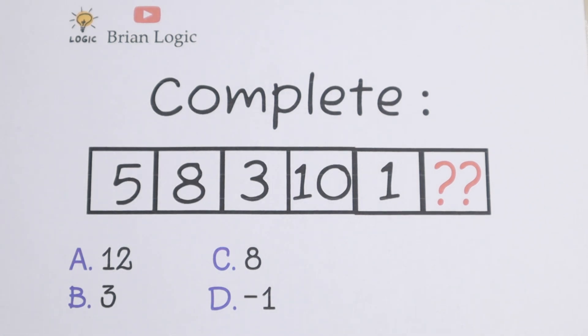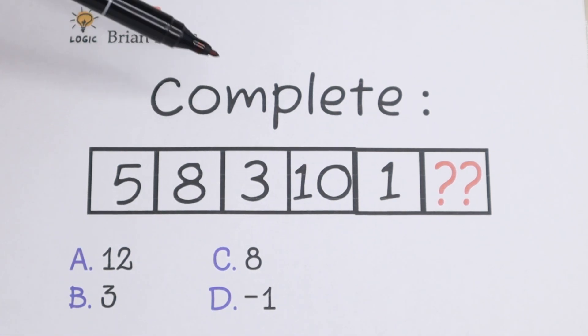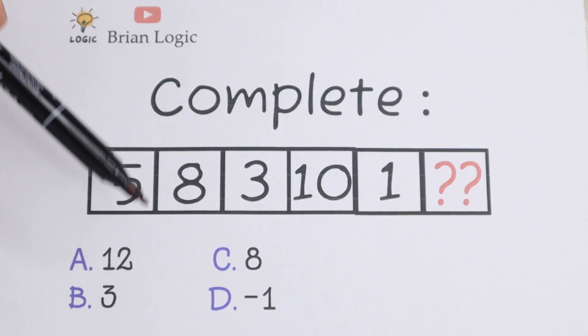Hello everyone and welcome back to my channel. In this video we are going to solve this interesting algebra problem. We need to complete this numeric series. We have 5, 8, 3, 10, 1 and we need to find the last number. Right here on the bottom you have a lot of options A, B, C and D.